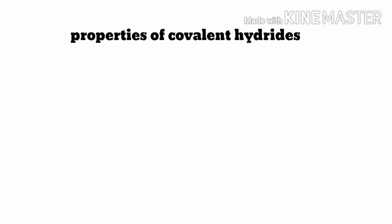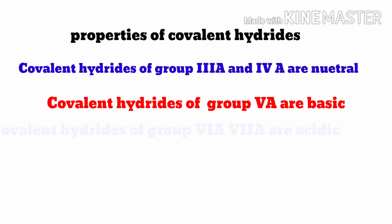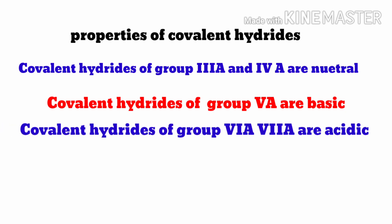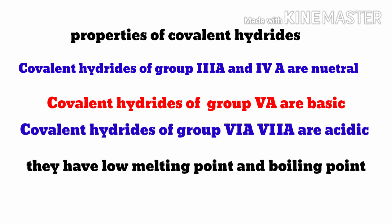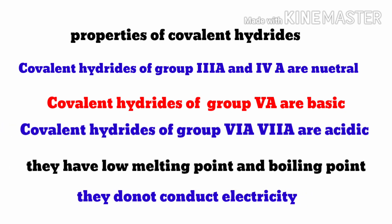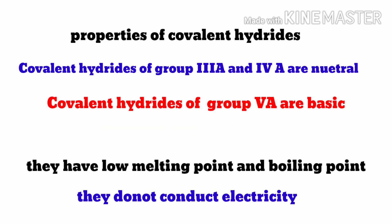Properties of covalent hydrides: covalent hydrides of group 3A and 4A are neutral, hydrides of group 5A are basic, and groups 6A and 7A are acidic. They have low melting and boiling points, and they do not conduct electricity.